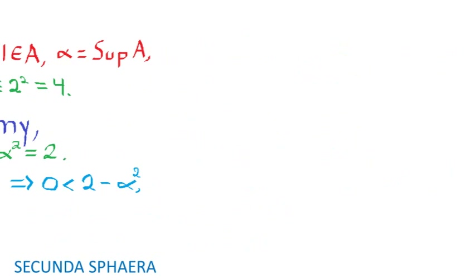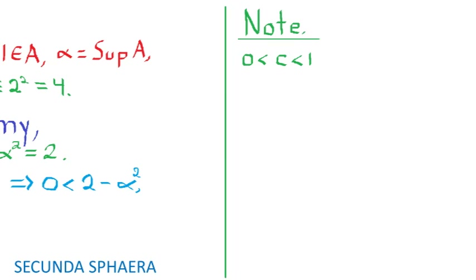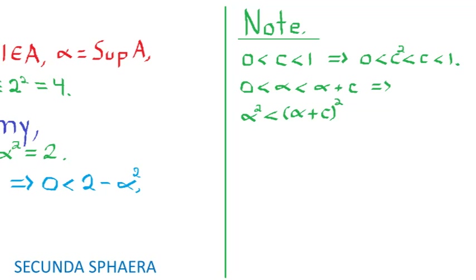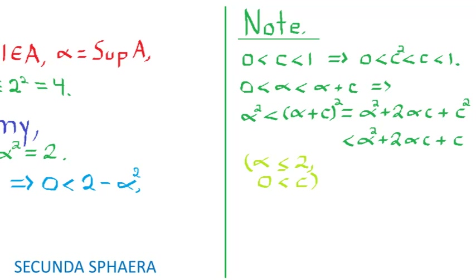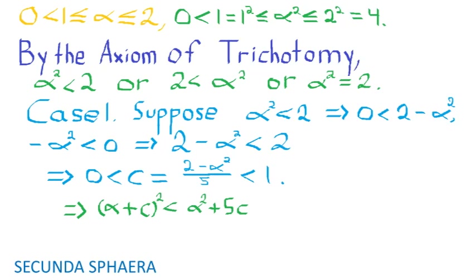In order to continue, it will be useful to do some calculations as a separate note. If c is greater than 0 and less than 1, then 0 is less than c squared, which is less than c, which is less than 1. So alpha is less than alpha plus c, which implies alpha squared is less than (alpha plus c) squared, which equals alpha squared plus 2·alpha·c plus c squared. Since c squared is less than c, this is less than alpha squared plus 2·alpha·c plus c, which is less than or equal to alpha squared plus 4c plus c, because alpha is less than or equal to 2 and c is greater than 0. Therefore (alpha plus c) squared is less than alpha squared plus 5c, which equals alpha squared plus (2 minus alpha squared), which equals 2. Since alpha plus c is greater than alpha and greater than 0, alpha plus c is in A.